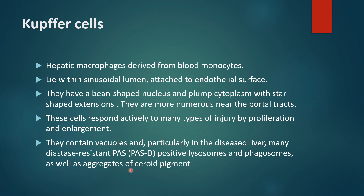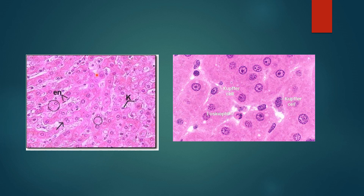Kupffer cells do not have junctions with endothelial cells; instead they span the whole lumen of the sinusoids and sometimes even occlude the lumen. In the cytoplasm of Kupffer cells, metabolic products of iron are sometimes present, showing involvement in destruction of senescent RBCs. In H&E staining, the smaller nuclei are those of endothelial cells, while Kupffer cell nuclei are difficult to differentiate. The sinusoidal spaces and the eosinophilic hepatocytes can be appreciated.